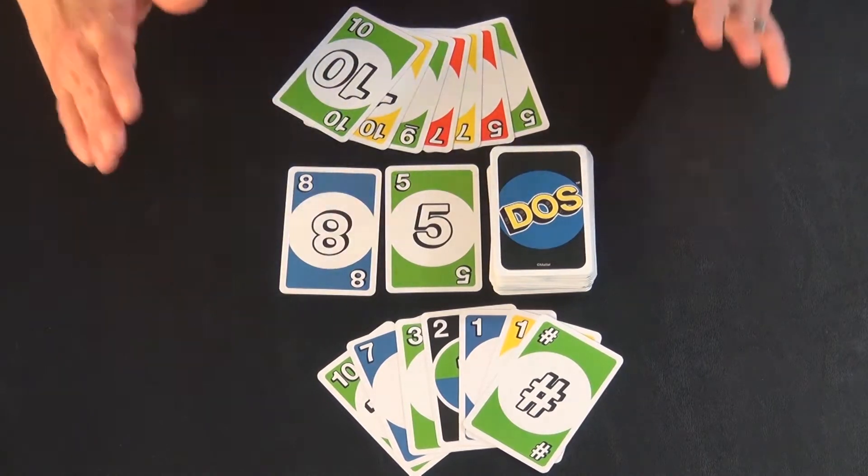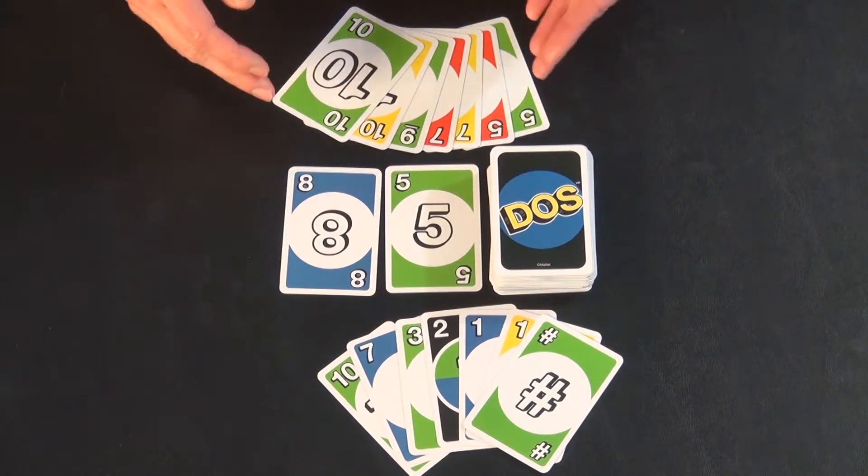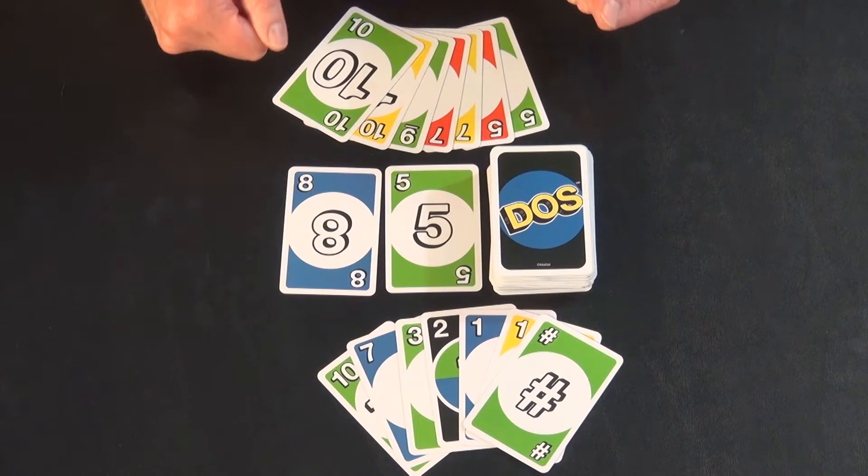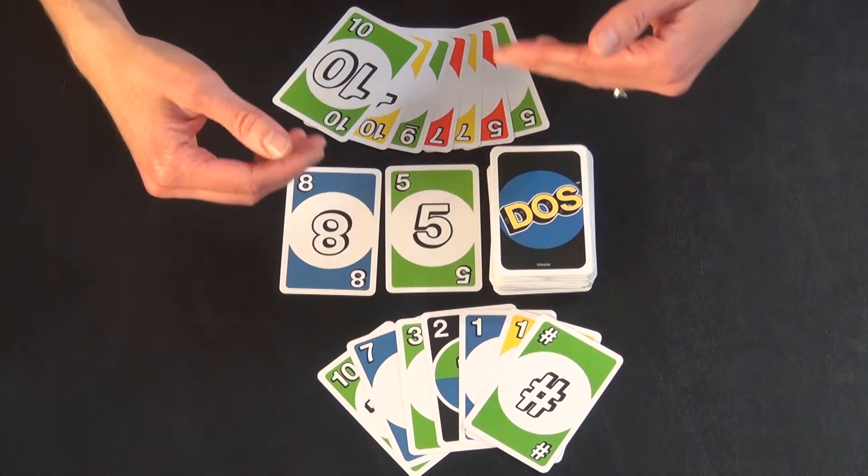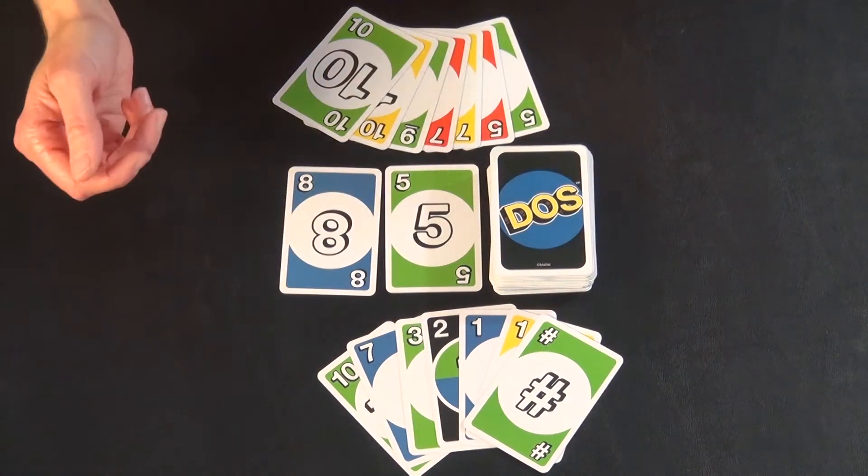The goal in DOS, just like in regular UNO, is to be the first to get rid of your hand of cards. At that point, you get to total up the points from your opponent's hands, and whoever has the most points at the end is the winner.